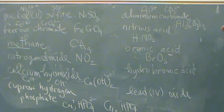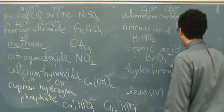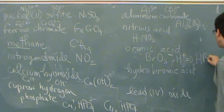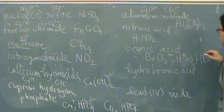Bromic, the highest is perbromic acid. So that would be BrO4, but this is bromic, so it's three, with an H+, that will form HBrO3.